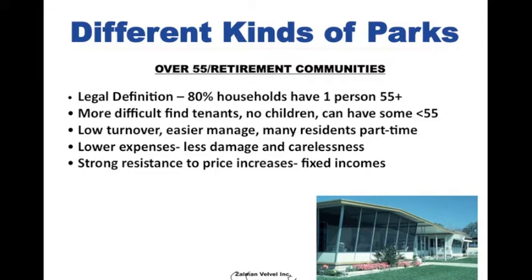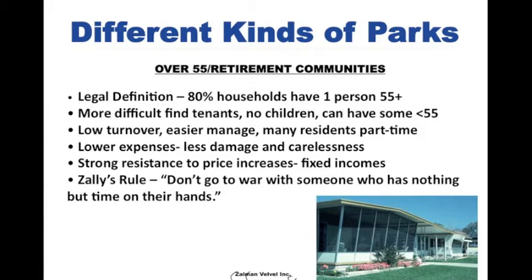There is, however, a strong, strong, strong resistance to price increases because many people in over-55 parks are on fixed incomes. We have people in our over-55 park living on $800 a month, with a $295 a month lot rent and at least $100 a month for utilities. That's Zolly's Rule — this is very important. While people in an over-55 park are very easy to manage, I strongly recommend that you talk to them at least twice a year. Have meetings, tell them about any changes or price increases. The important thing is: never go to war with someone who has nothing but time on their hands, because over-55 people have a lot of time. If you get them riled up, they can gang up on you, and they have a lot more time than you do.